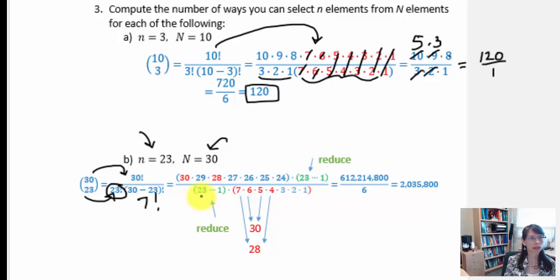So when I start expanding 23 times 22 times 21, everything that I have here in green in our denominator will be exactly the same factors that I have in the numerator. So I know that everything there will completely reduce to 1.